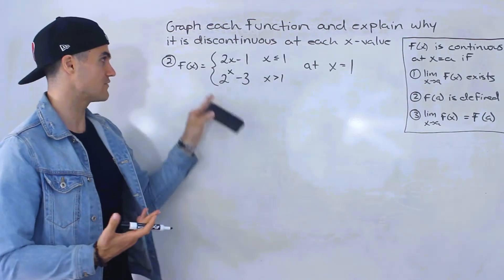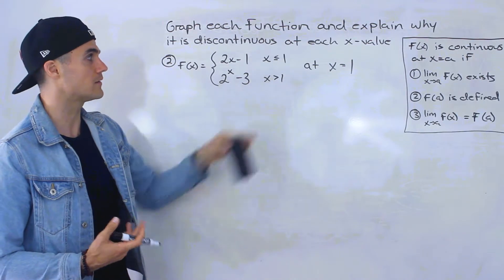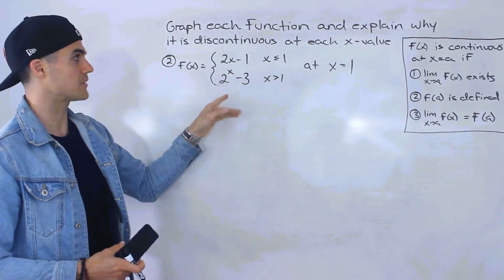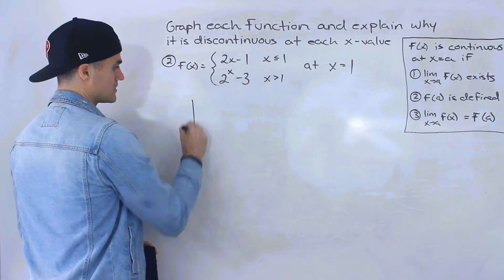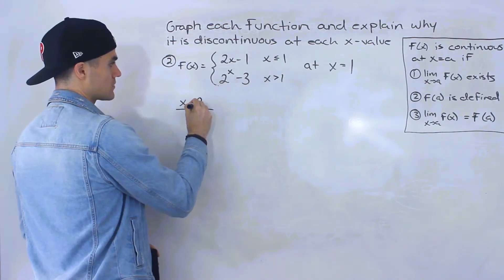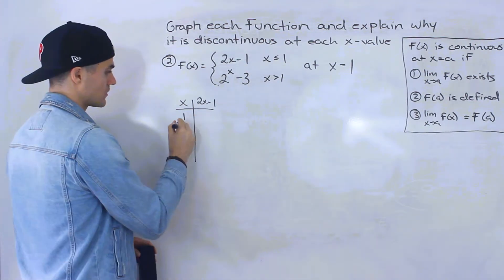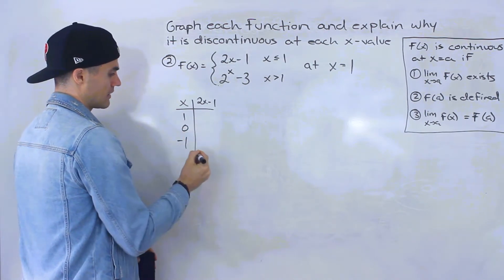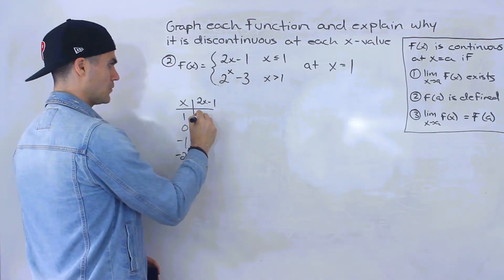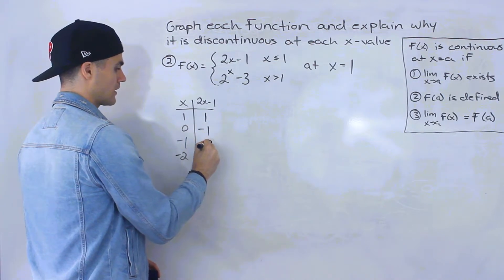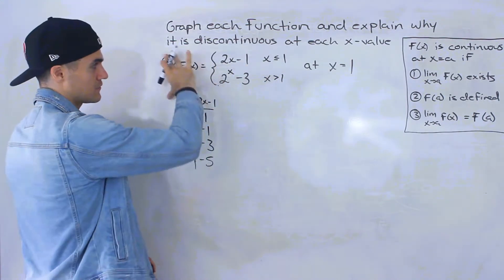Moving on to number two: f of x equals two x minus one when x is less than or equal to one, and two to the power x minus three when x is greater than one. It's a piecewise function, and we have to explain why it's discontinuous at x equals one. Let's first graph it — I'm going to make a table of values for both functions separately. For two x minus one, starting at x equals one and going left: x values one, zero, negative one, negative two give y values one, negative one, negative three, negative five.